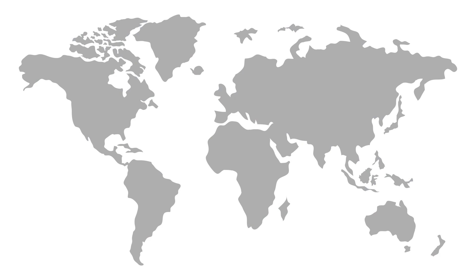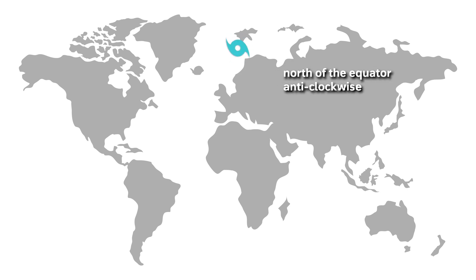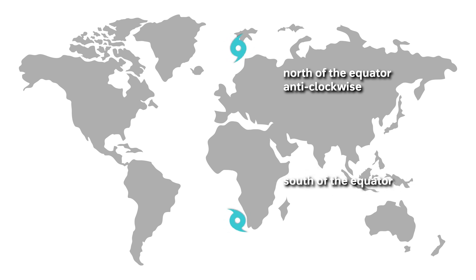As the air rises in a storm, it also starts to rotate. If the storm forms north of the equator, it will spin anti-clockwise. If the storm forms south of the equator, it will spin clockwise.